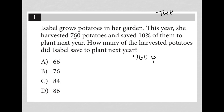So 760 potatoes — I'll just say P — but she saved 10%. So 10% of 760 equals 76. Anytime you want to take 10% of a number, you just find the decimal and move it to the left one space. That's how we get 76, which is how many she's going to plant for next year.